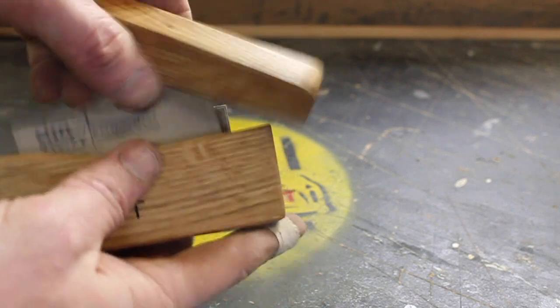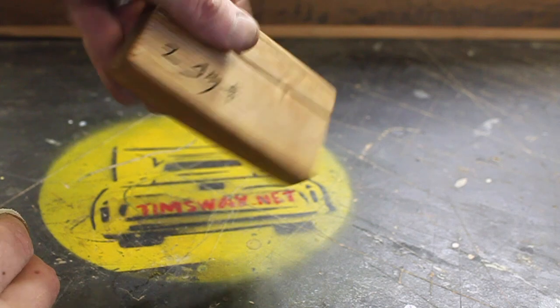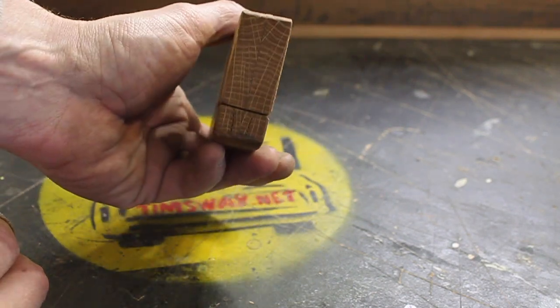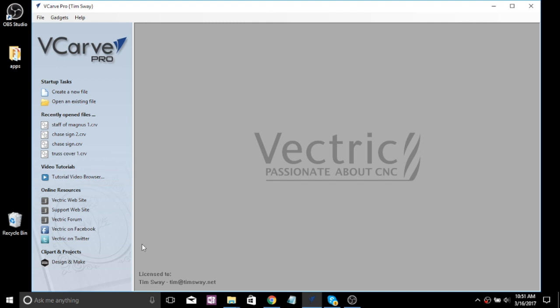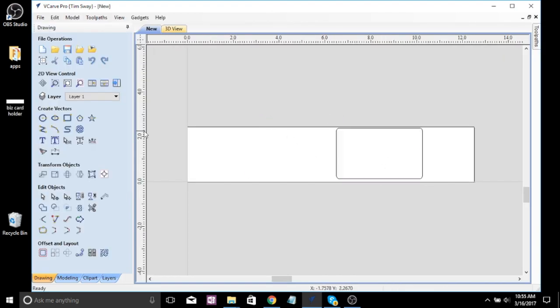I've been making these wooden business card holders for a long time out of reclaimed wood. I have another video about it that you could watch. I'll put a link below. But I have this new technology now in my shop with the Vectric software and the CNC machine, so I thought I would try to do it a little bit differently.